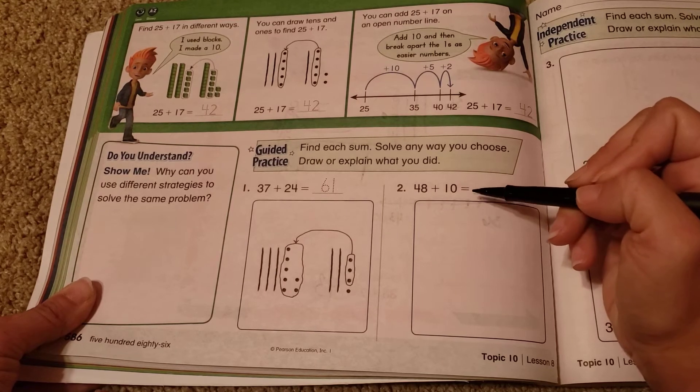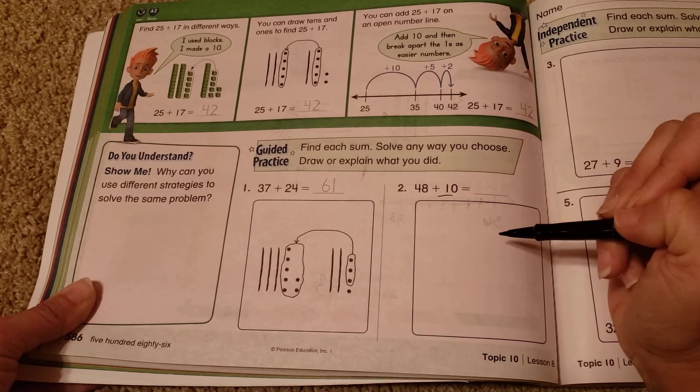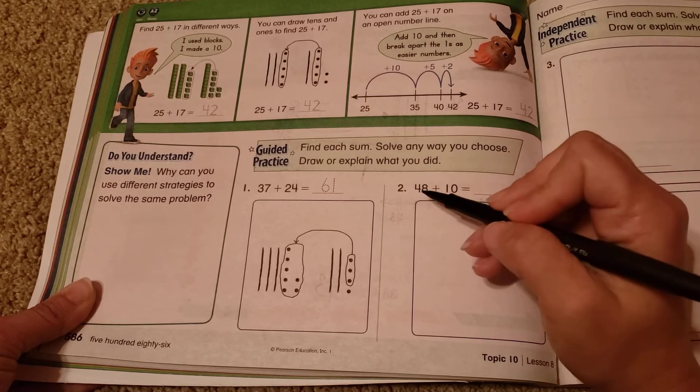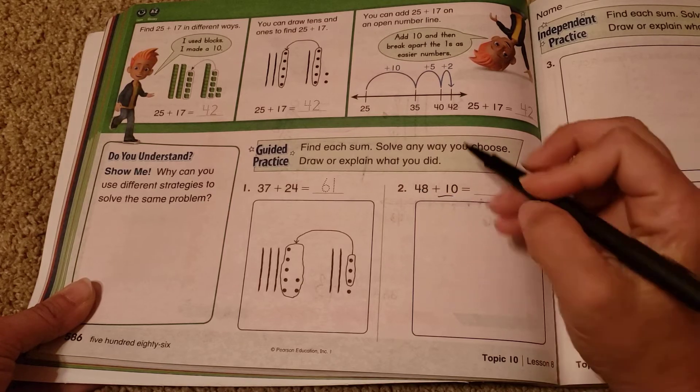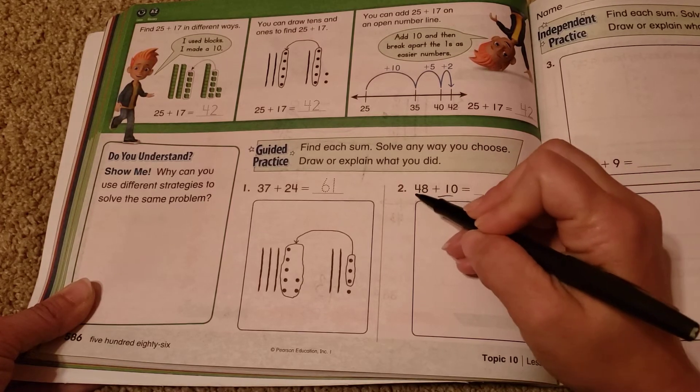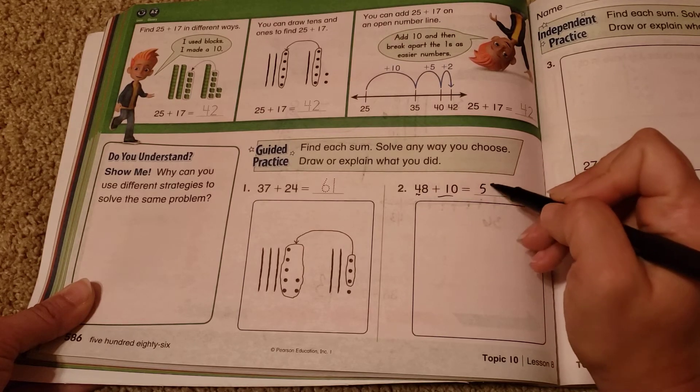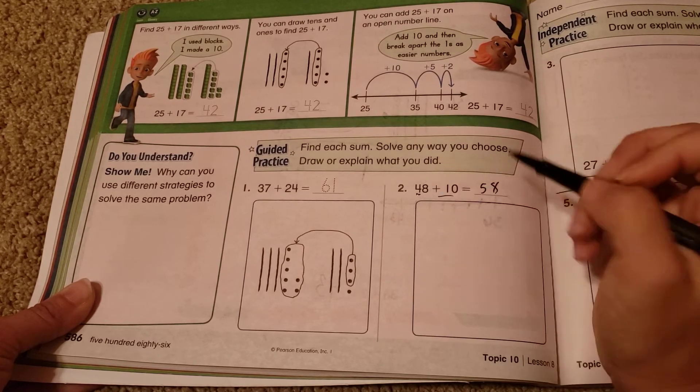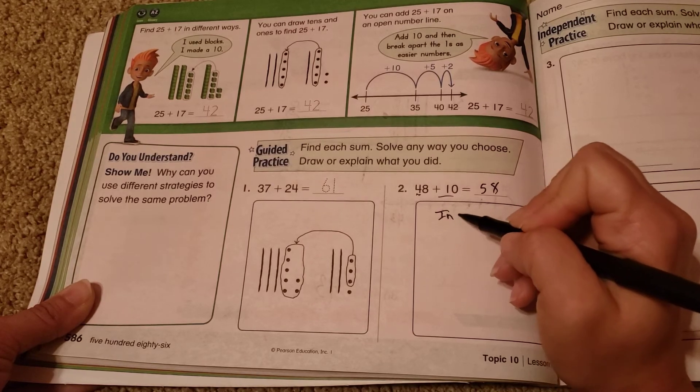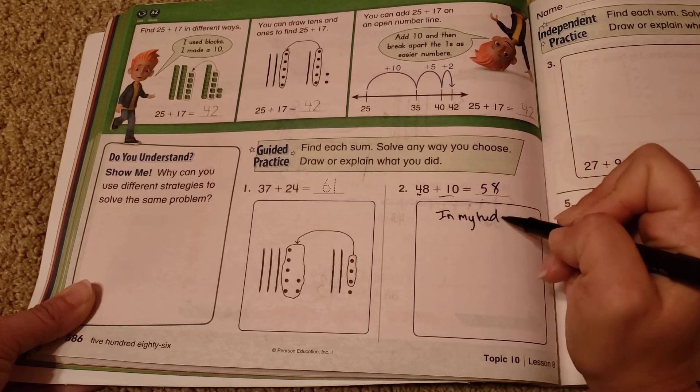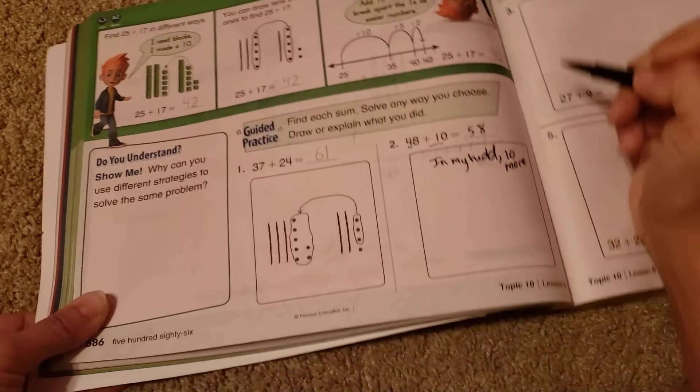So this is 48 plus 10. Oh, I like plus 10. Because I can do that in my head, can't I? Yep, I can. Because I know that 10 more. So the only digit I'm going to change here is the tens place, right? So 48, 10 more than that is 58. And as a drawer, explain what you did. In my head, 10 more, however you want to word it.